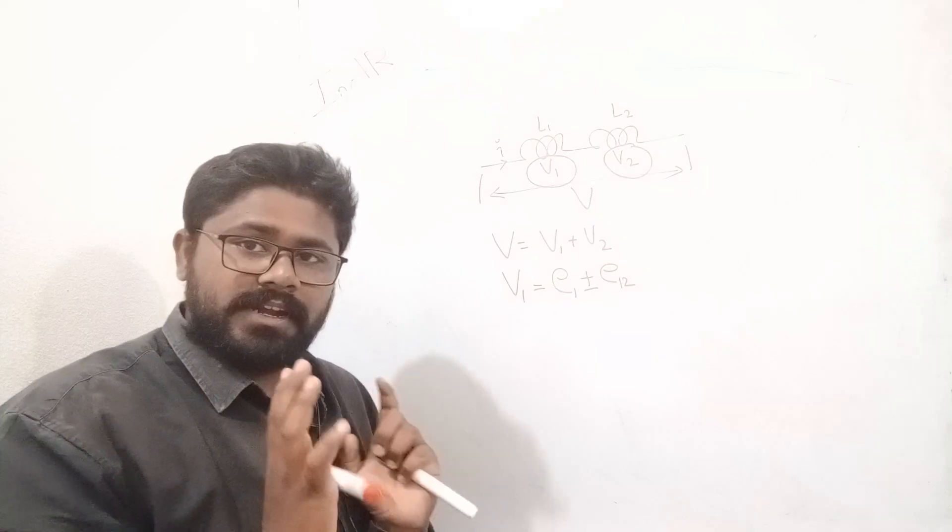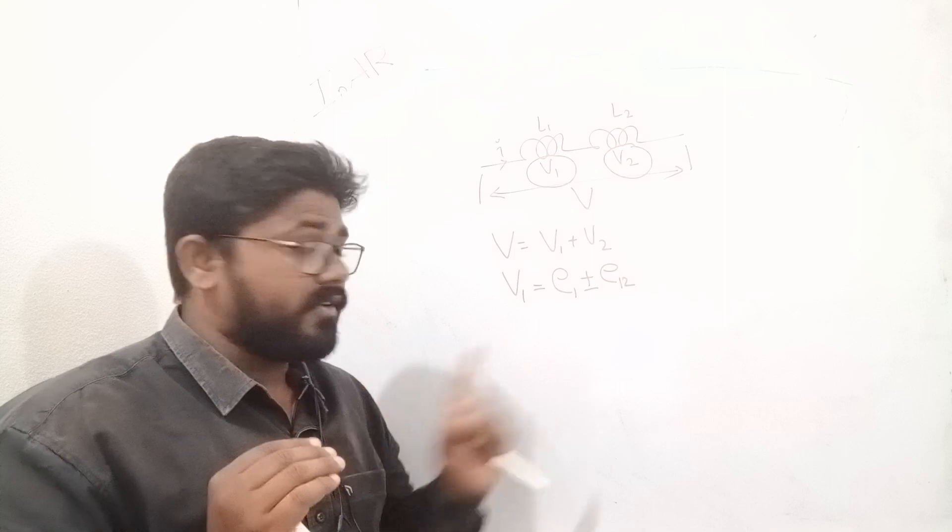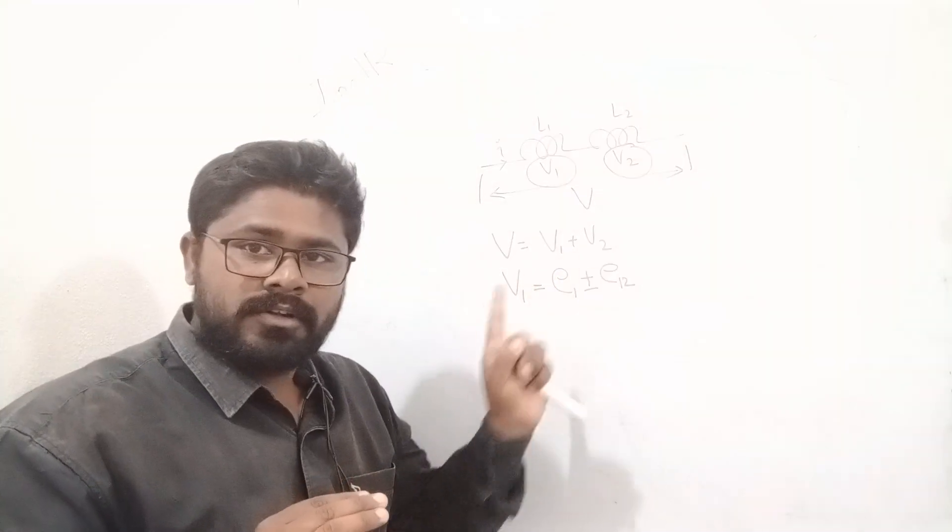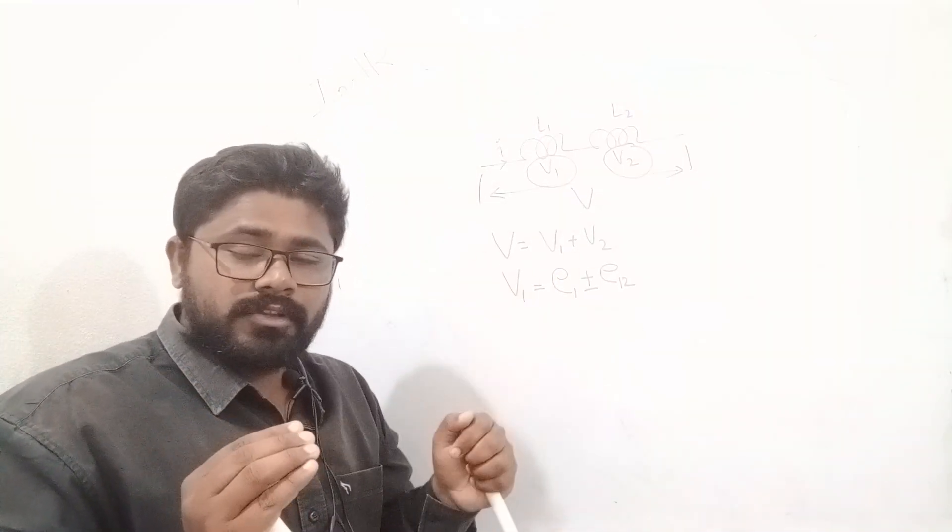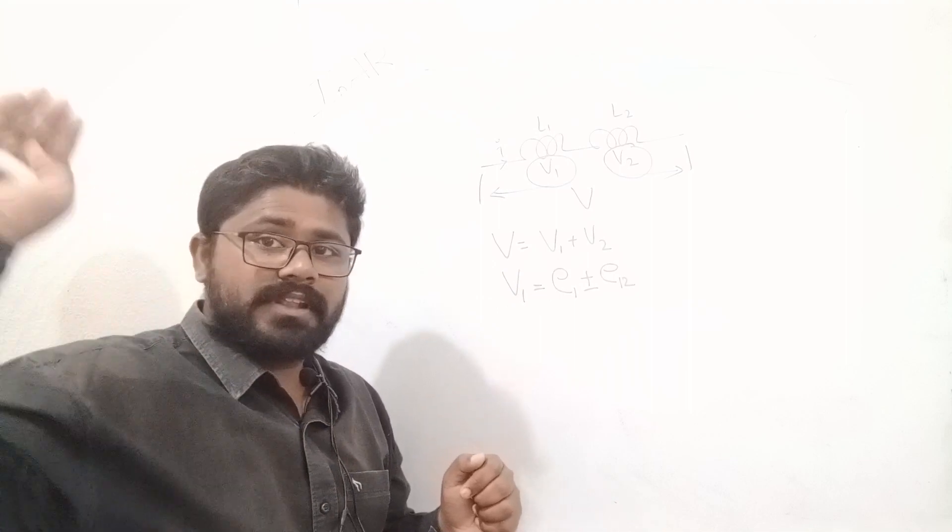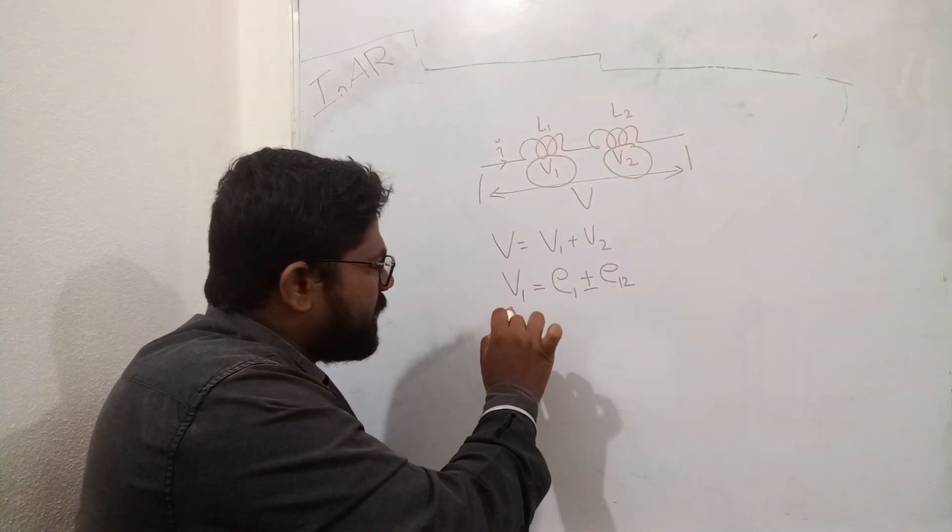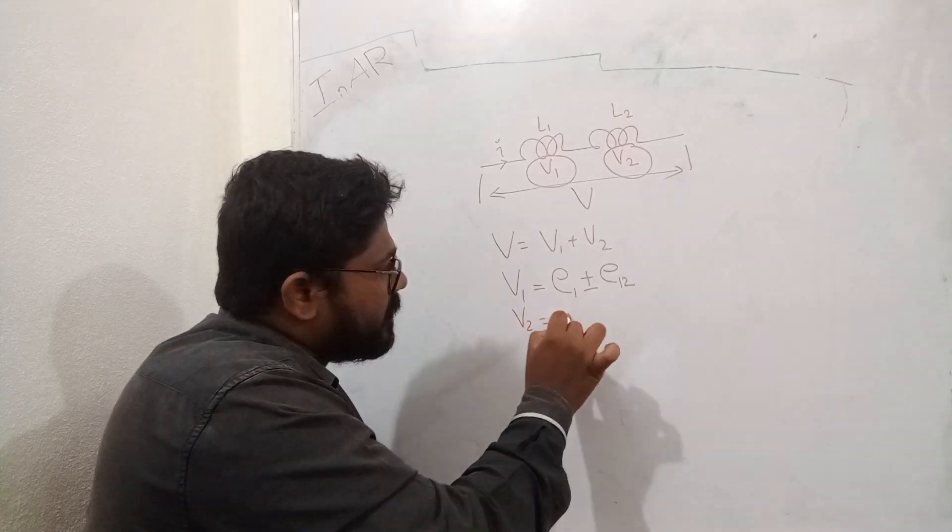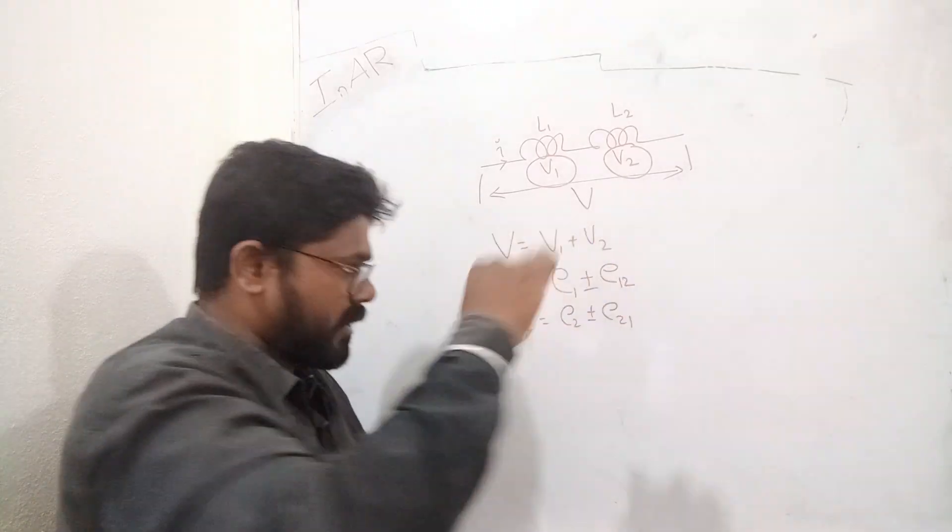It is easier for us to do the derivation by taking plus or minus. That is, plus and minus. We can use this assumption derivation. The same discussion goes to V2. V2 equals E2 plus or minus E21. Right?